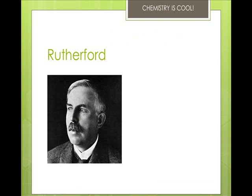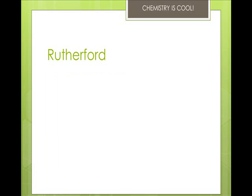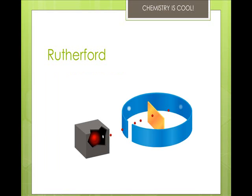Ernest Rutherford was a New Zealand physicist. He believed Thomson's plum pudding model was correct, but he devised an experiment to see how big the electrons spaced around in the positive matrix actually were. He used radioactive alpha particles, which are positively charged pieces given off by uranium, and shot them at a sheet of gold foil that was only a few atoms thick. There was a detecting screen that would fluoresce when the alpha particles hit it. He expected the alpha particles would pass through in a straight line without changing direction very much, because the positive charges should be spread out evenly and alone wouldn't stop the alpha particles.